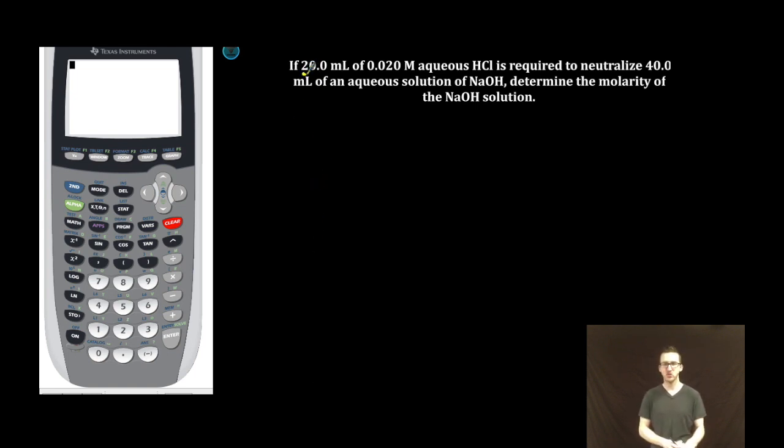We're told that if 20.0 milliliters of 0.020 molar aqueous hydrochloric acid is required to neutralize 40.0 milliliters of an aqueous solution of sodium hydroxide, determine the molarity of the sodium hydroxide solution.